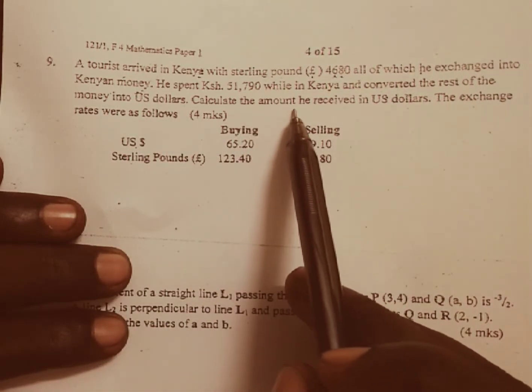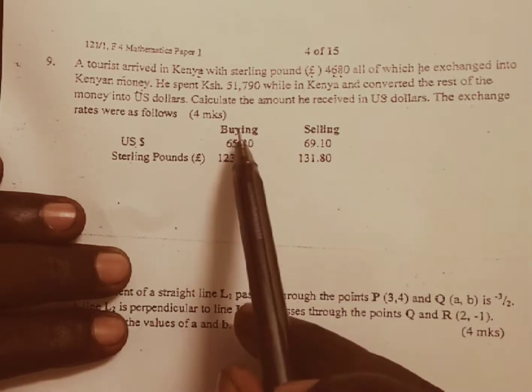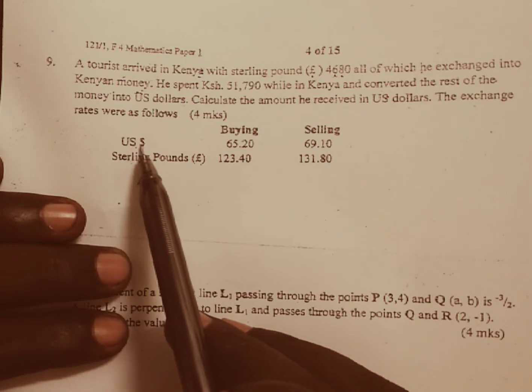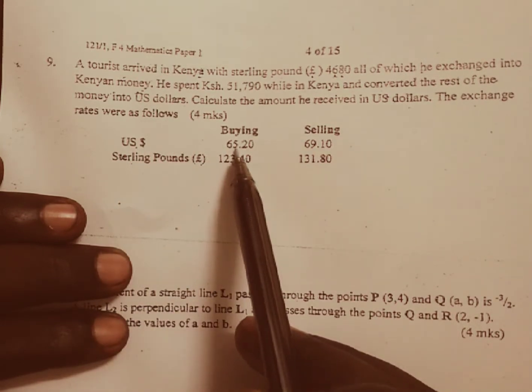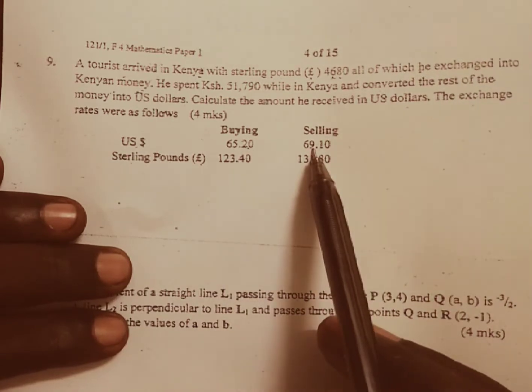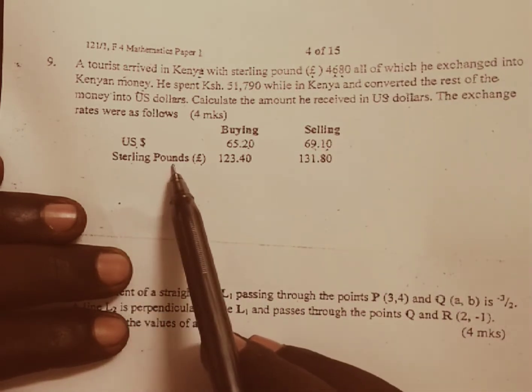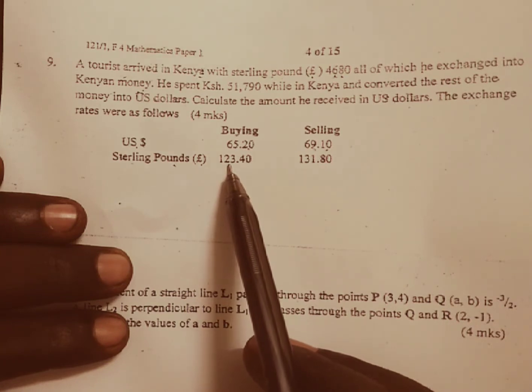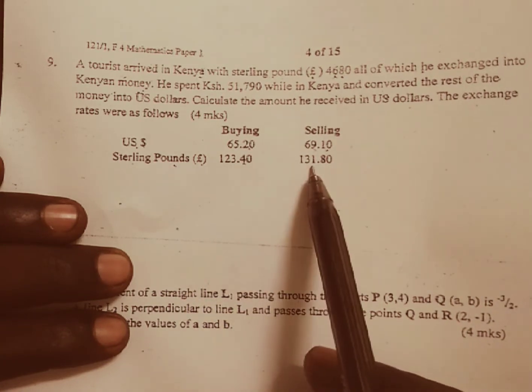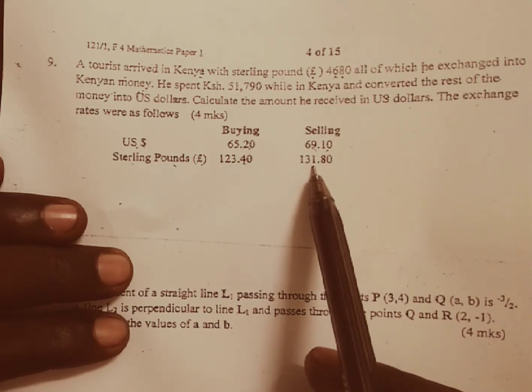Calculate the amount he received in U.S. dollars. Given the exchange rates as follows: we have one U.S. dollar buying is 65 shillings 20 cents and the selling is 69 shillings 10 cents. We have also the sterling pound buying 123 shillings 40 cents and selling at 131.80 cents.